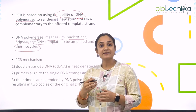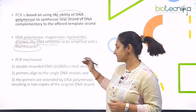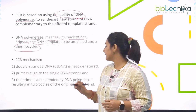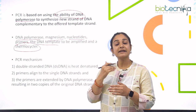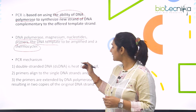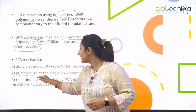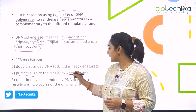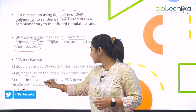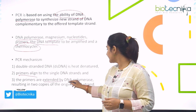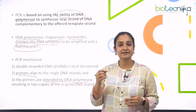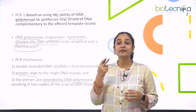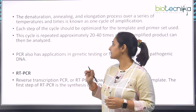When it comes to PCR, the whole mechanism operates in this way. The first step is the double-stranded DNA that is heat denatured. Then the primers are aligned to the single-stranded DNA. When these primers are used, they are extended by the DNA polymerase so that at the end we will have two copies of the original DNA strand.